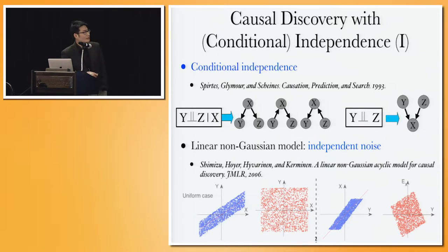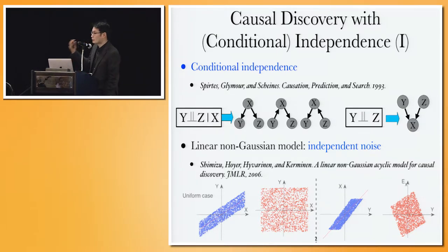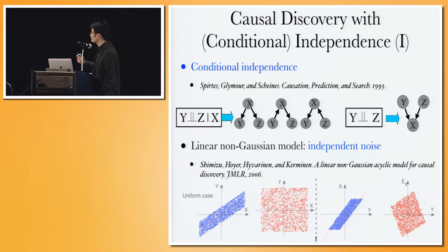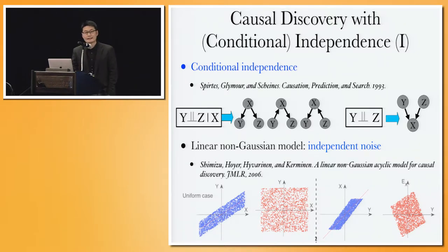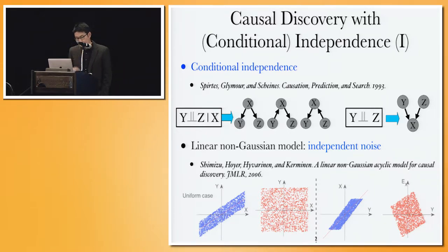In the last three decades, a lot of progress was made regarding causal discovery from observational data. We have data and then we want to estimate the underlying causal information. About 25 years ago, conditional independence-based or constraint-based methods were proposed to handle this problem. You analyze the conditional independence relations in the data and consider those as constraints, then you can recover some of the causal information.